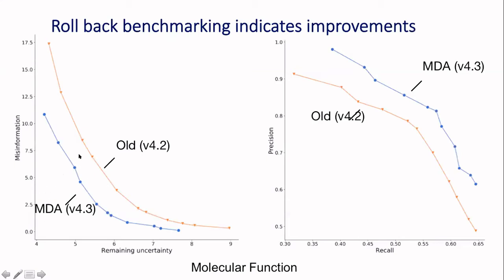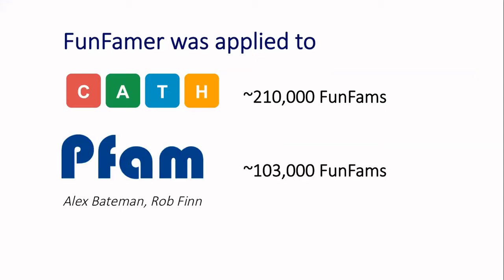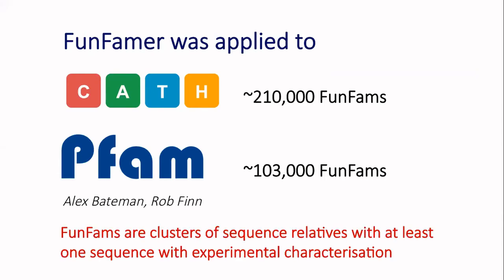We could see improvement in functional purity — the accuracy with which this was working. We built over two hundred thousand FunFams ready for CAFA-4. However, we're somewhat limited in coverage because not only do we need an experimental term for each functional family, but we also need a structure for the superfamily. To increase the power we brought in domains from Pfam — a wonderful resource set up by Alex Bateman and more recently managed by Rob Finn — and we applied FunFam to that, which increased our functional family library.